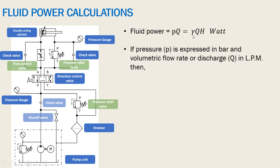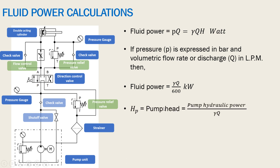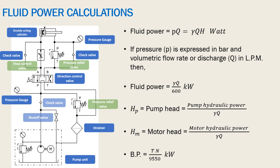If pressure is expressed in terms of bar and volumetric flow rate or discharge q in liters per minute, then we have to prove that fluid power is equal to p times q divided by 600, expressed in kilowatt. Then we will see how to find out the pump head, the motor head, and the brake power available at the shaft.